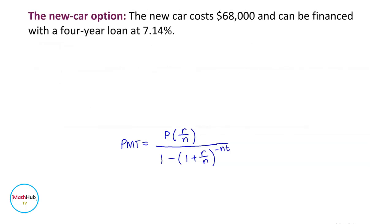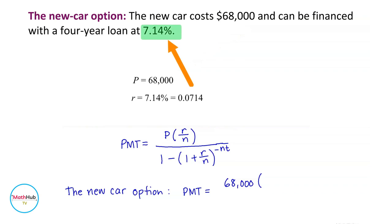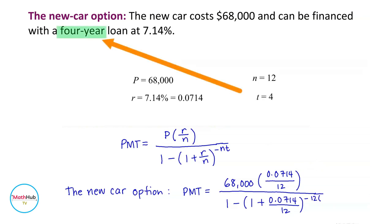For the new car option, the monthly payment PMT equals $68,000 — that's P — times the rate 7.14%, which in decimal form is 0.0714, divided by 12, since N equals 12 for monthly payments. The denominator is 1 minus 1 plus 0.0714 over 12, raised to negative 12 times T, where T equals 4 years.